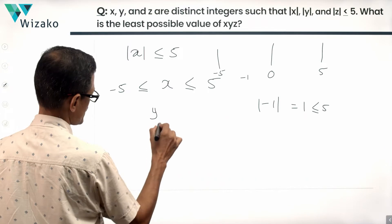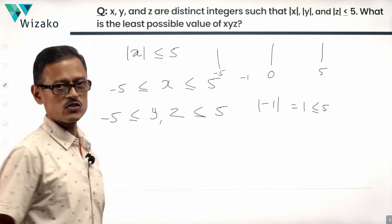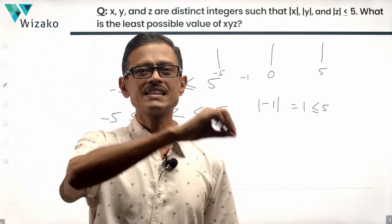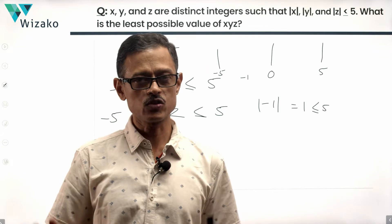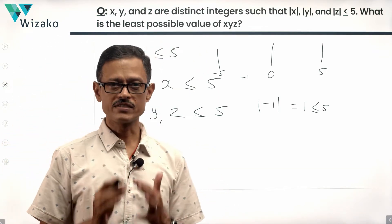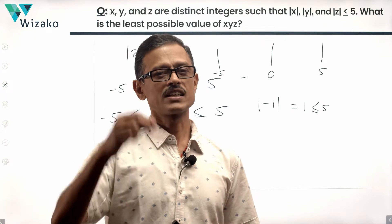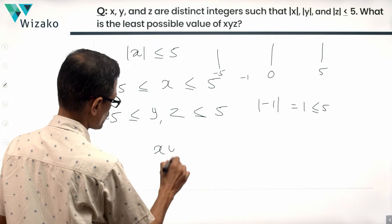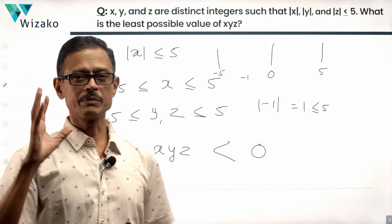The same holds for y and z — both also take values from minus 5 to plus 5, both included. These numbers are all distinct, meaning if x takes minus 5, then neither y nor z can be minus 5. We are interested in finding the least possible value of the product x·y·z. Since the numbers can take negative values, the product will be least when it is negative.